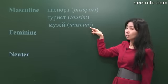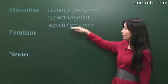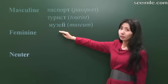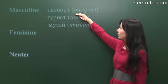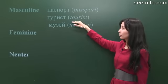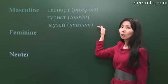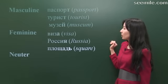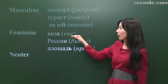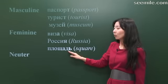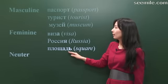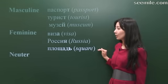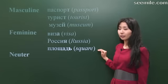the majority of Russian nouns ending with a consonant, and й is a consonant too, attributed to the masculine gender, like here: Паспорт, турист, музей. The majority of nouns ending with а, я, or the soft sign are attributed to feminine. Виза, Россия, площадь.